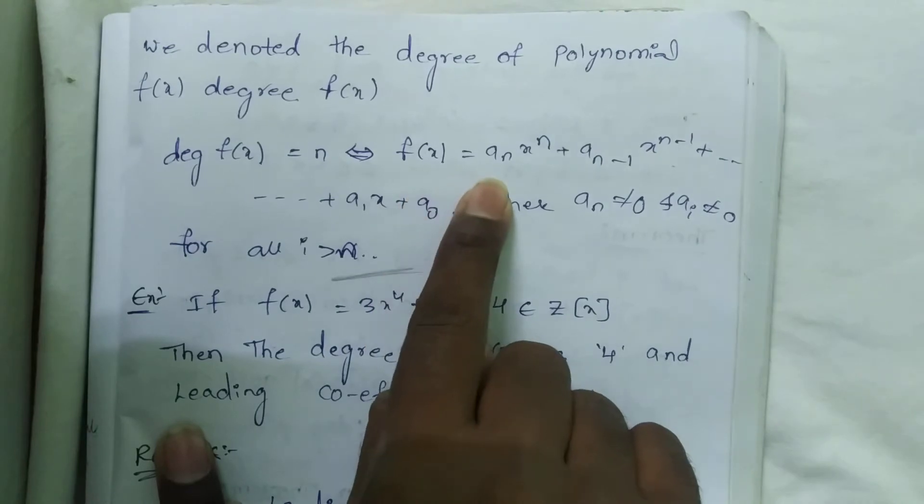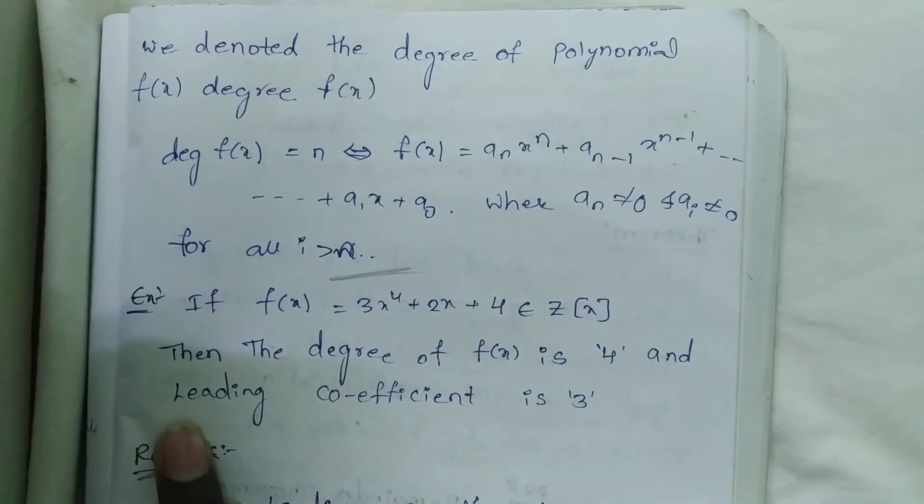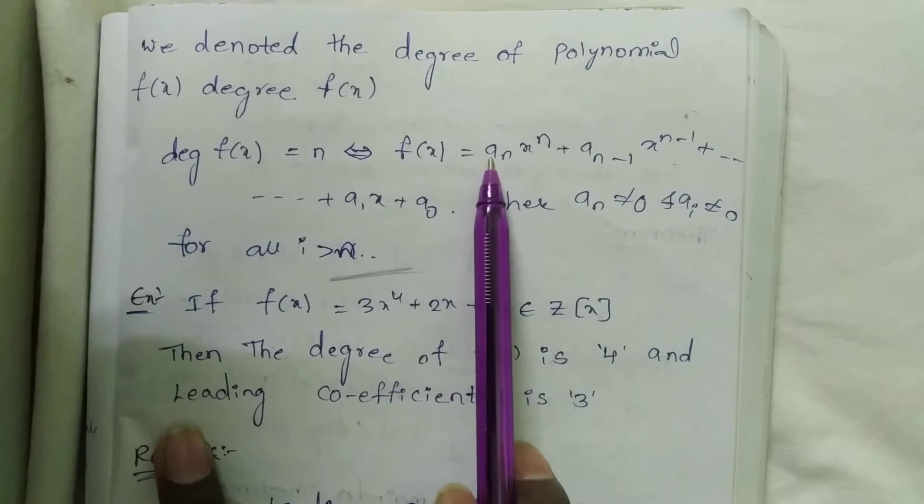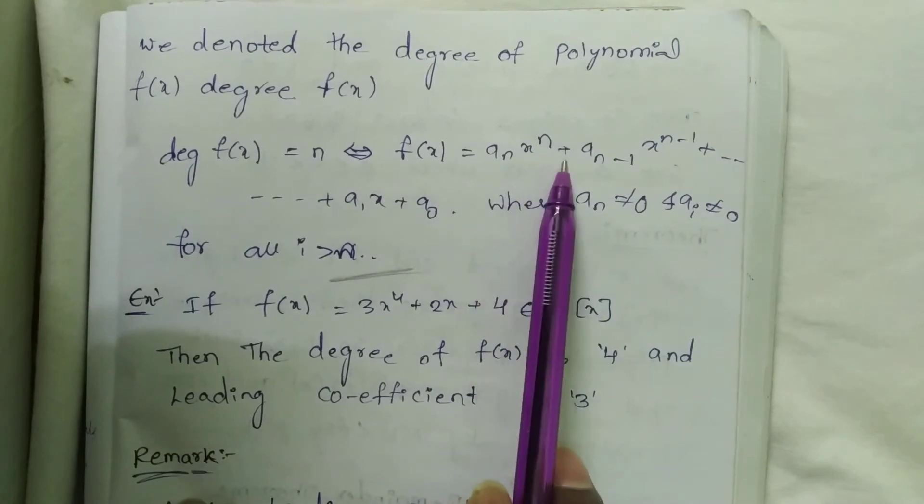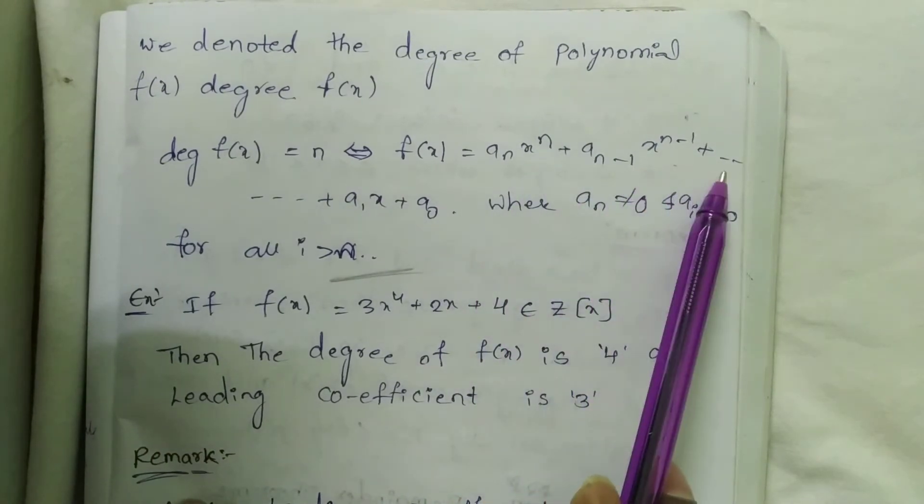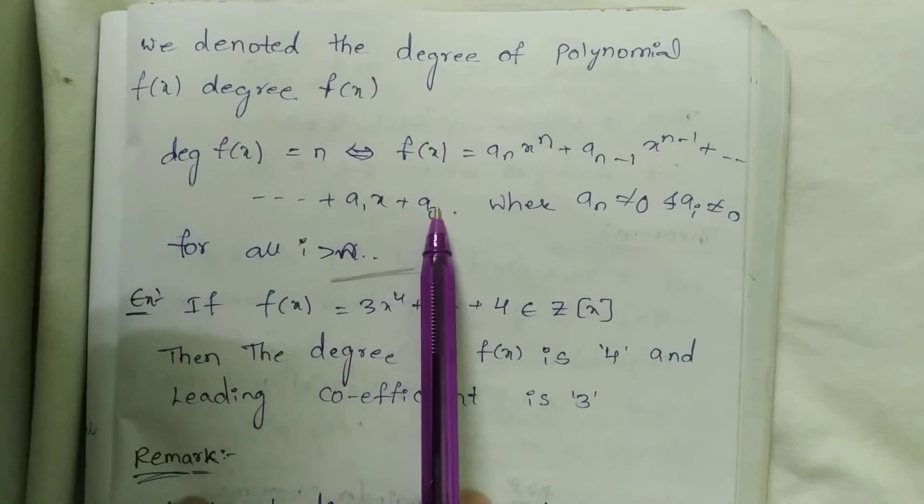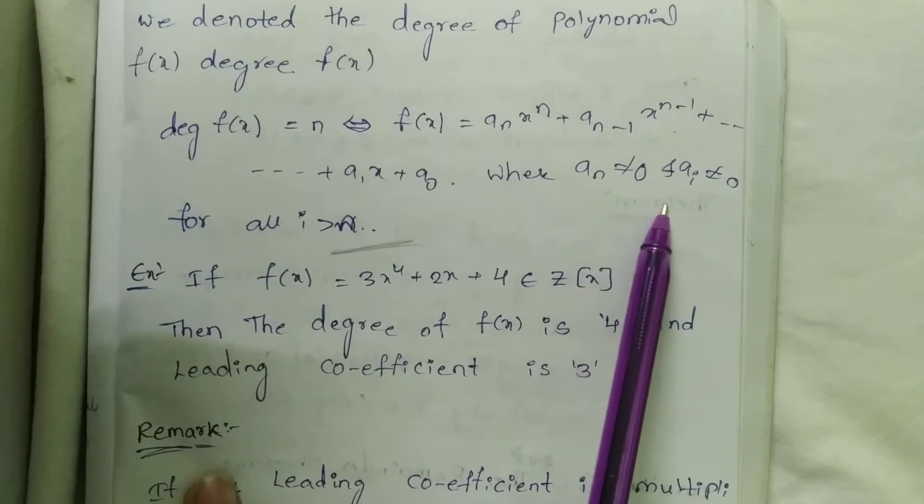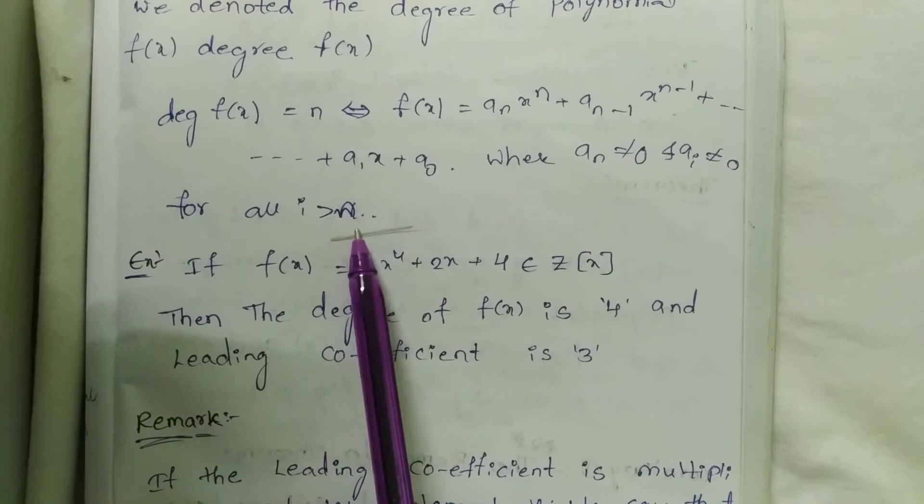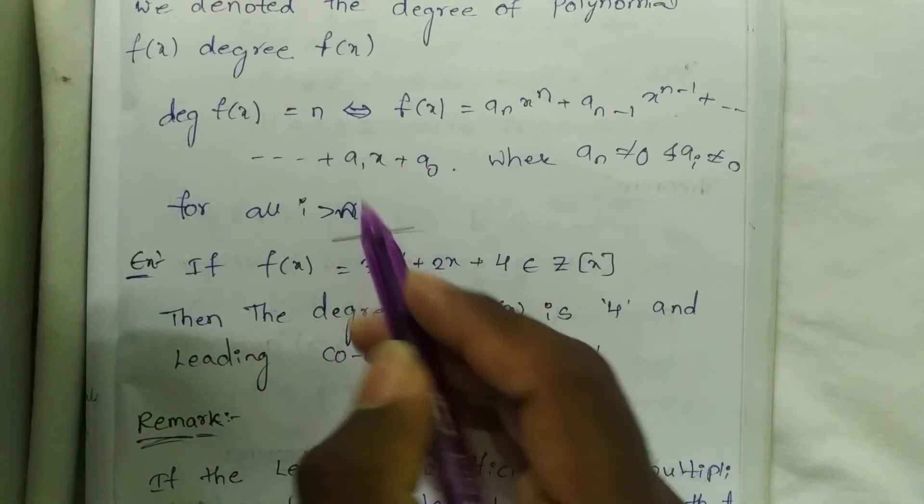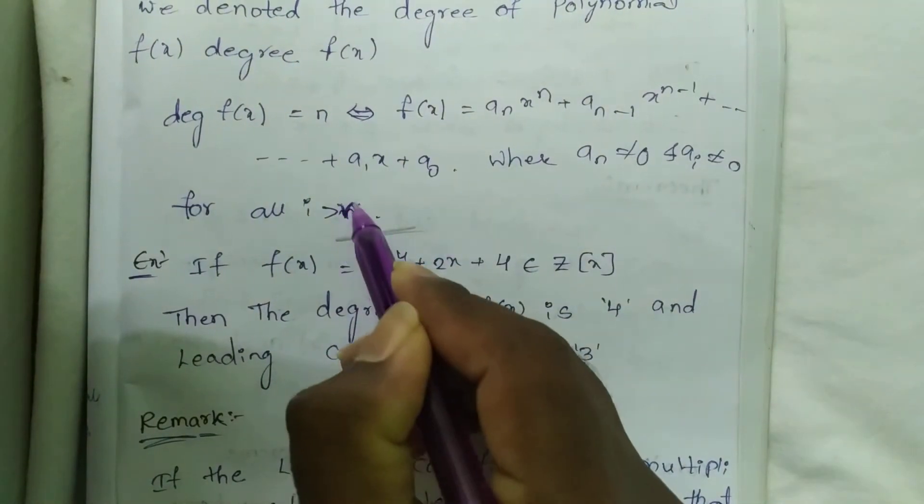f(x) = aₙxⁿ + aₙ₋₁xⁿ⁻¹ + ... + a₁x + a₀, where aᵢ = 0 for all i greater than n.